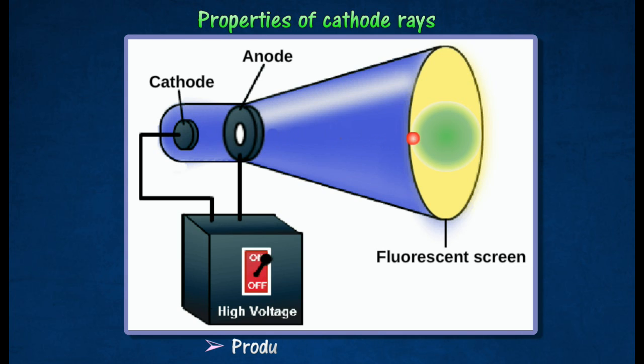Cathode rays cause zinc sulfide to fluoresce and have high kinetic energy. They are deflected by the electric field and magnetic field because they are negatively charged particles.